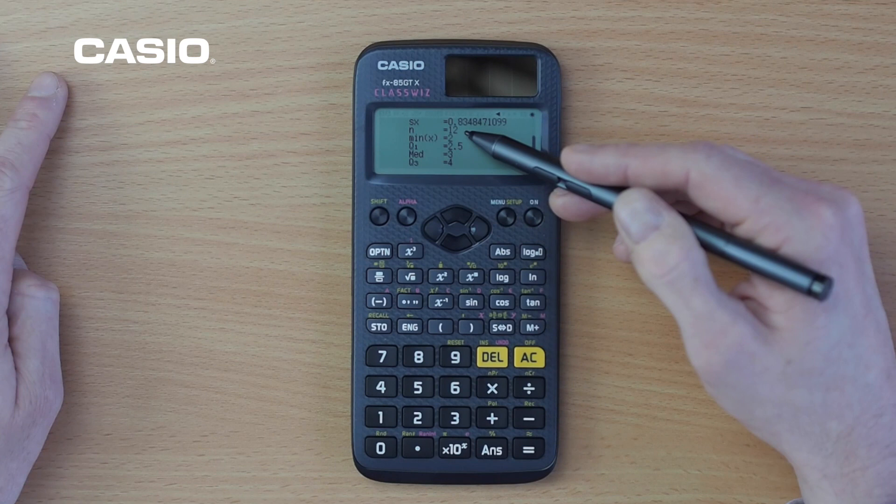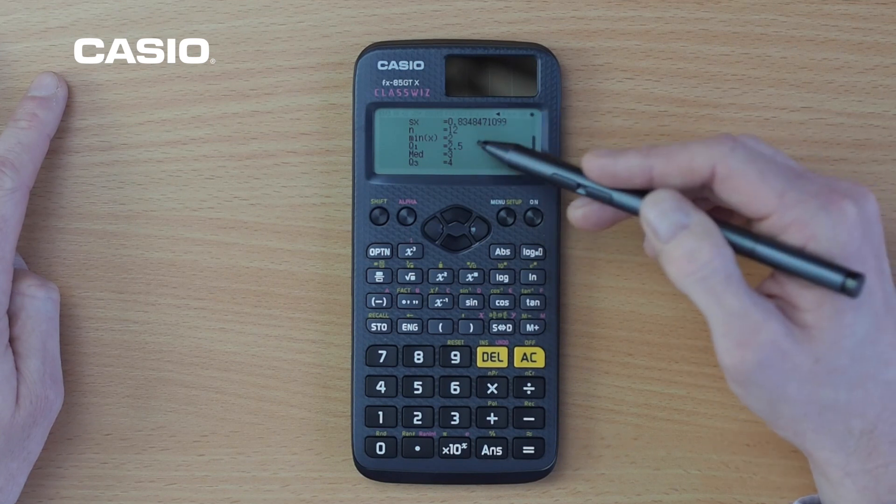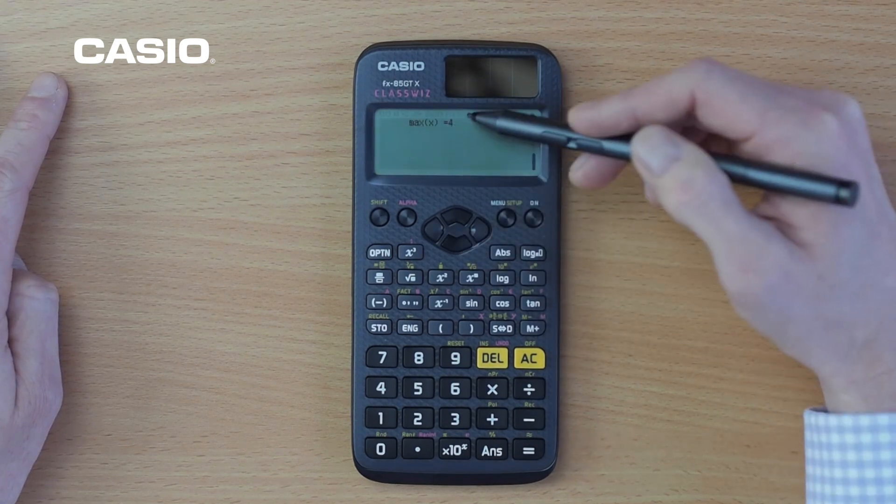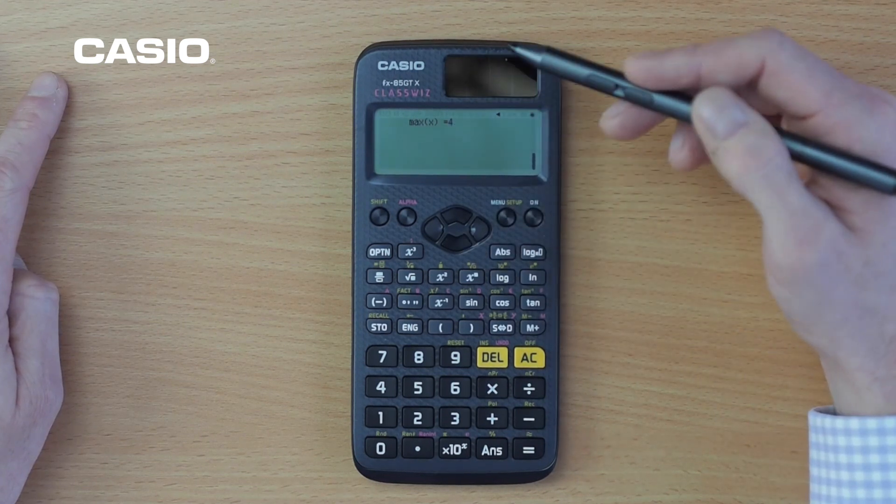We can scroll down and see the number of pieces of data that we've got and new to the calculator this time around is we've actually got the quartiles in. So that and the minimum and the maximum.